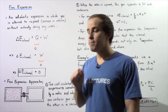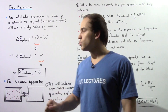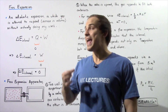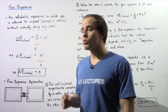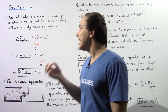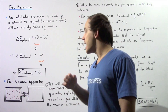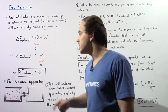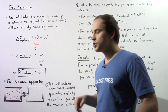In an adiabatic expansion, the change in internal energy is equal to the work. In a free adiabatic expansion, not only is Q zero, the W is also zero — no work is done by the system and no work is done on the system. That means that in a free expansion of a gas, the change in internal energy is equal to zero.